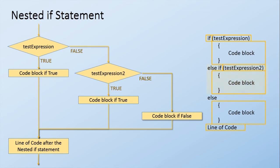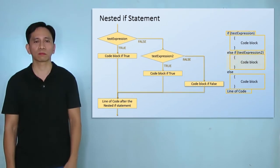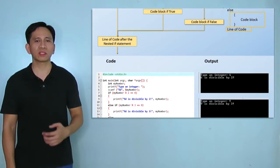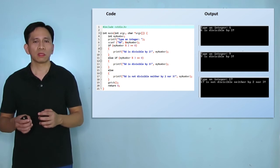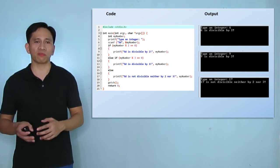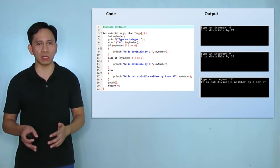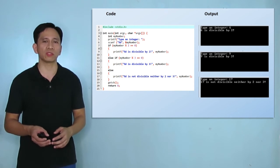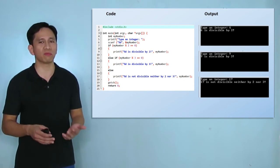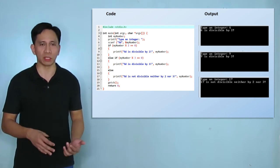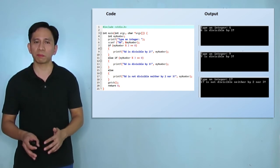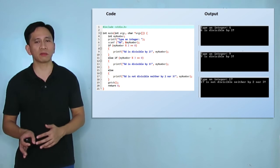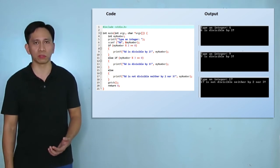Remember that we can add as many else-if blocks as needed. Now, let's add another capability to our previous program. It displays a message if an integer is divisible by 3, and also displays a message if the integer is neither divisible by 2 nor 3. Pause the video for a while. Do this in Dev C++. Compile then run your project to determine if you have the same output.